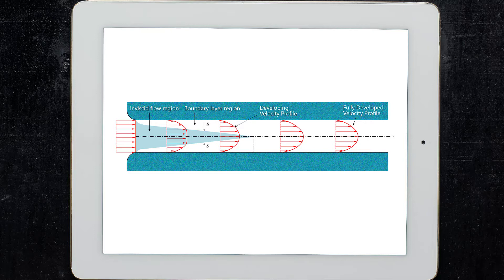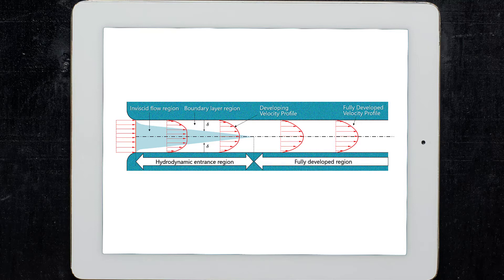In this way, we can define two regions: a hydrodynamic entrance region, where along a section of the channel we have both inviscid and viscous flow, and then the fully developed region, where the viscous effects are relevant in the entire channel section.